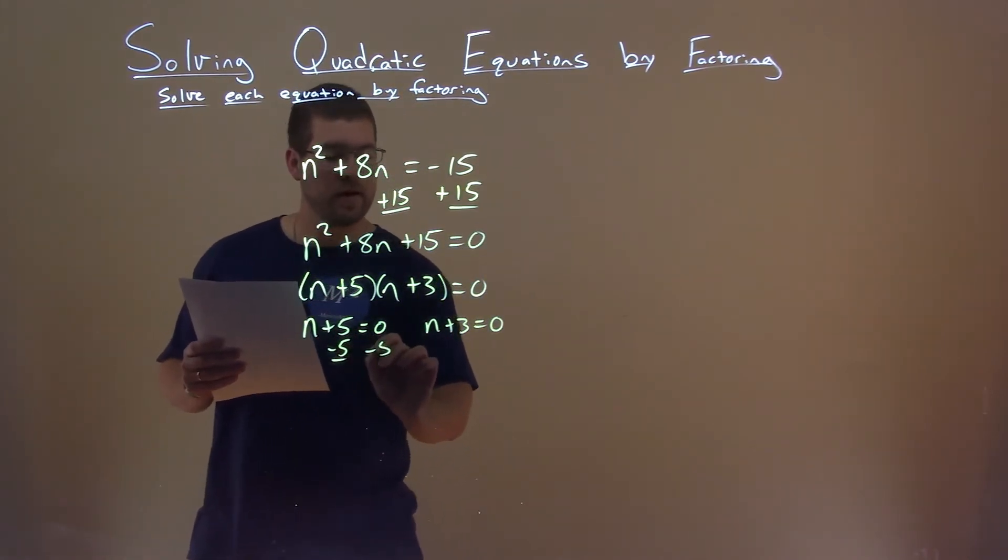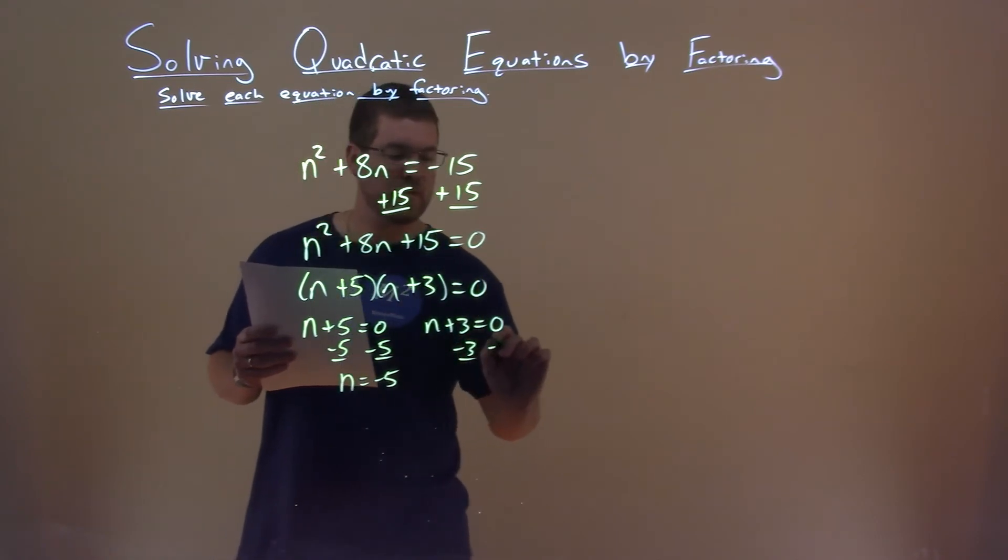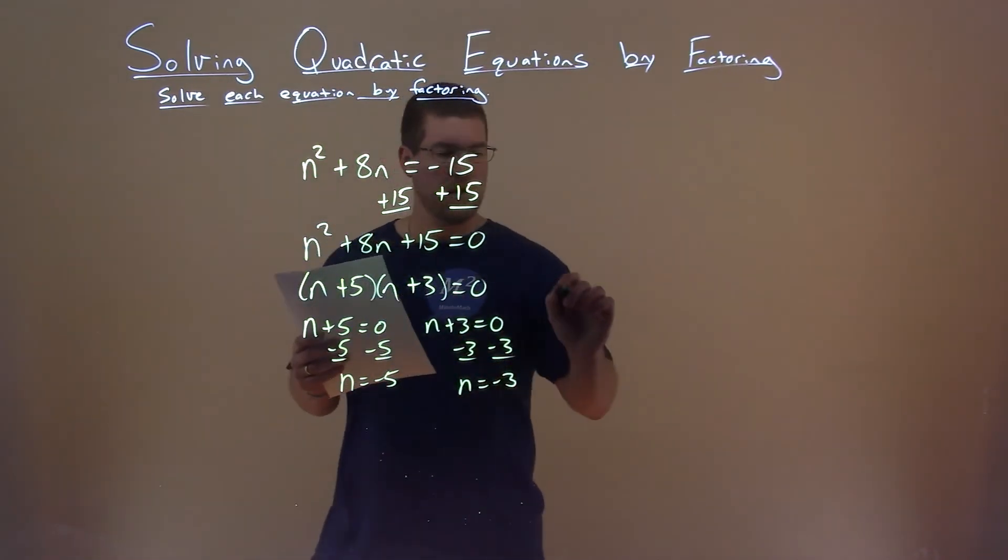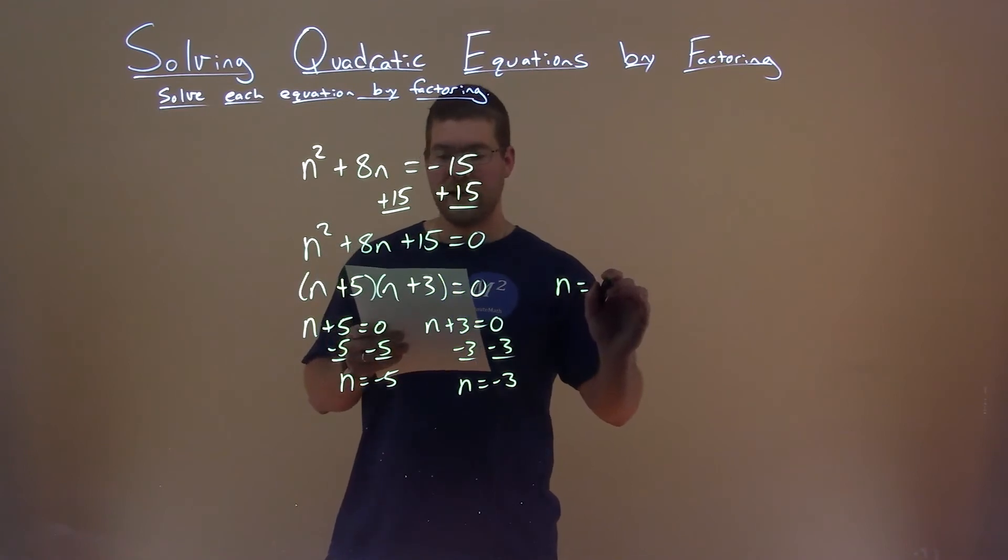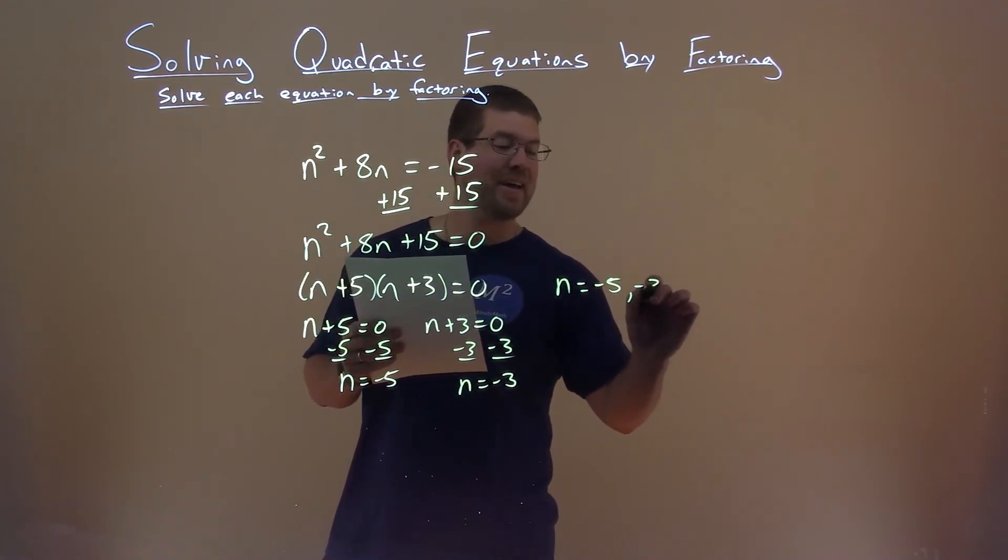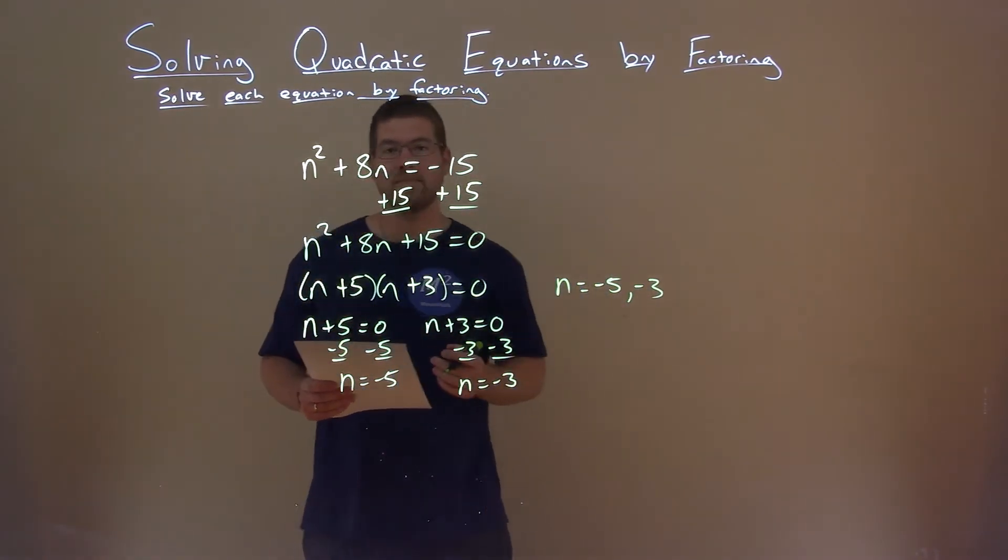We subtract 5 from both sides, and n equals negative 5. Subtract 3 from both sides, and n equals negative 3. And so my two solutions are just n equals negative 5 and negative 3, and that is our final answer.